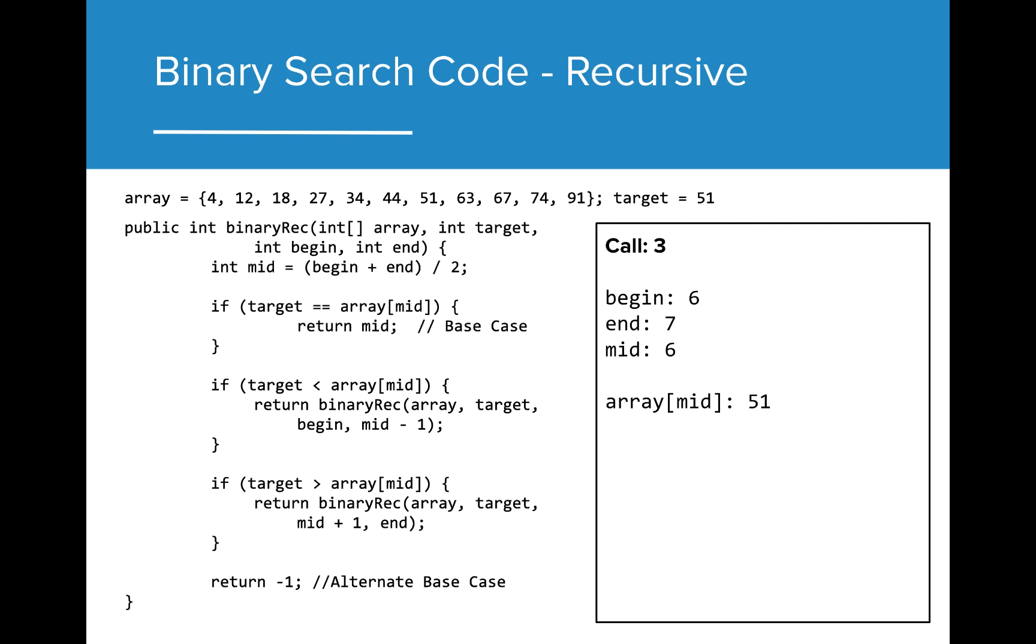On our third call, we find that our target is found at the midpoint. Once the value is found, the index value of the target is then returned back through each of the recursive return statements until it eventually gets back to the original call statement.